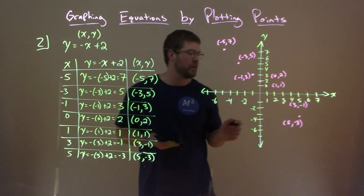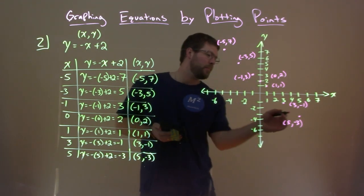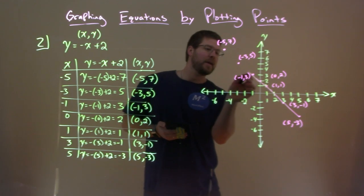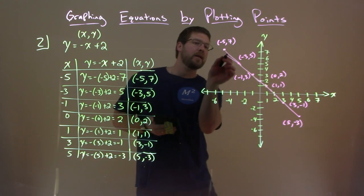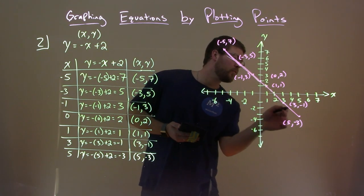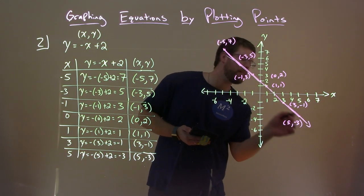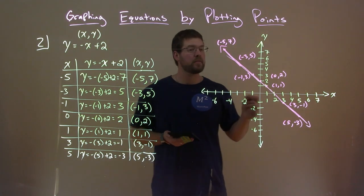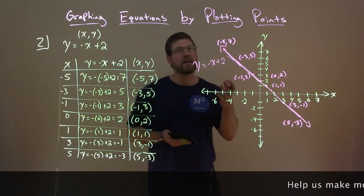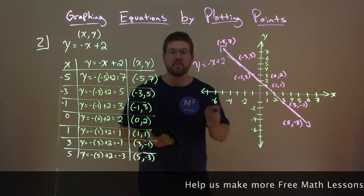It should be a straight line because it's a linear equation. Let's see if I can do a decent straight line freehand. You should use a ruler, to be honest, but I don't really have a lightboard ruler. So we've got to do what we can. And there's our line, y equals negative x plus 2. We've graphed that equation by plotting points.